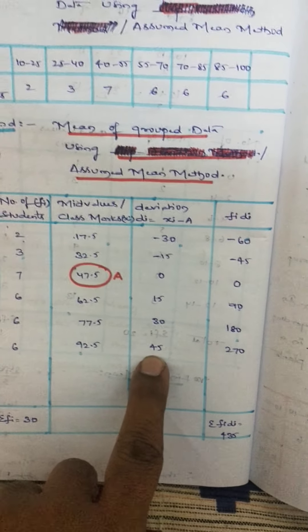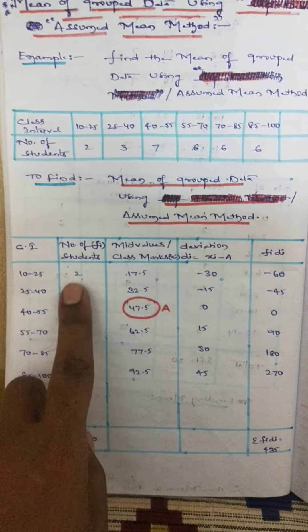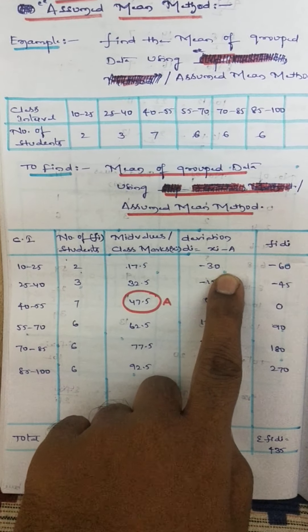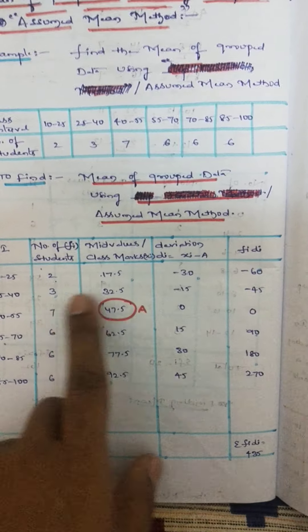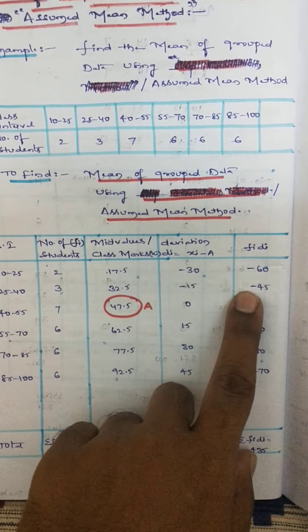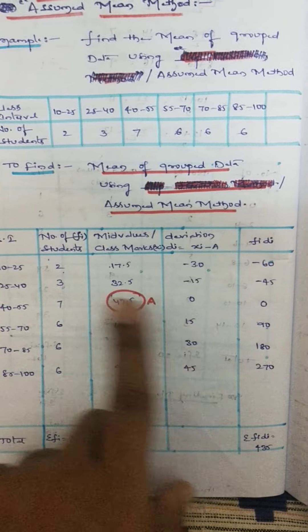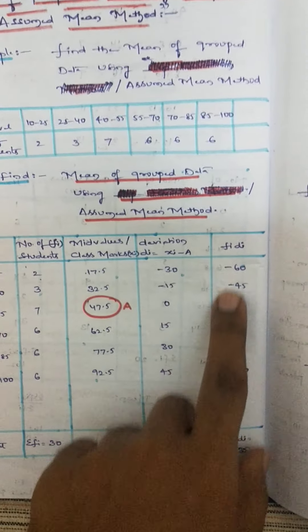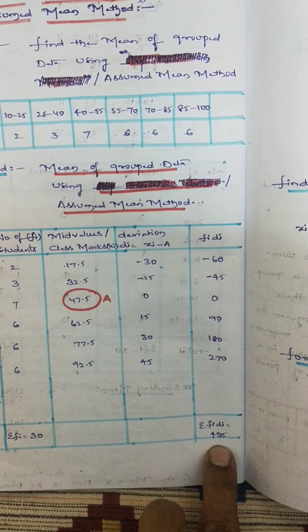After getting the result in the last column, let me know what FiDi column is. Take the product of the frequencies and deviation, FiDi. 2 into minus 30 is minus 60, 3 into minus 15 is minus 45, 7 into 0 is 0. Take the normal product, normal multiplication in this column, and after doing the product, take the sum of that FiDi.